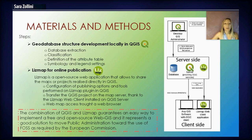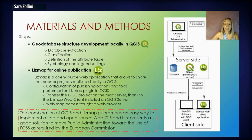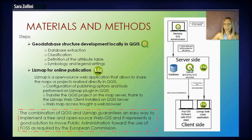The main steps of our work are two. The first one is to develop the geodatabase structure locally in QGIS and then for the live publication use LeadsMap, which is an open-source web application that allows sharing of maps or projects realized directly in QGIS. The combination of QGIS and LeadsMap guarantees an easy way to implement a free and open-source WebGIS and represents a good solution to move public administration toward the use of FOSS as required by the European Commission.